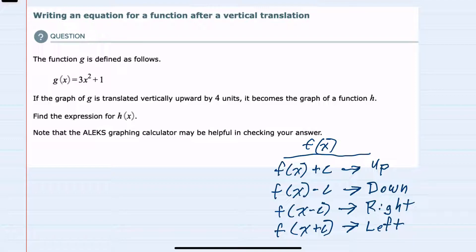In this example, we're given g(x), and we're told that g is translated vertically upwards by 4 units to become h(x).